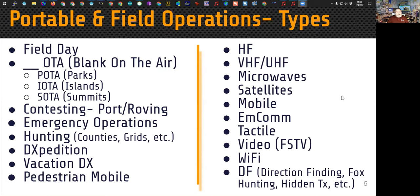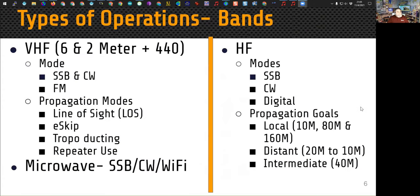We can operate on all different bands, many different modes, and many different types of operations — everything from satellites to microwaves to HF. Even direction finding is a form of portable operation when we go out doing fox hunts, hidden transmitters, etc. We can operate on a variety of bands using a variety of different modes.